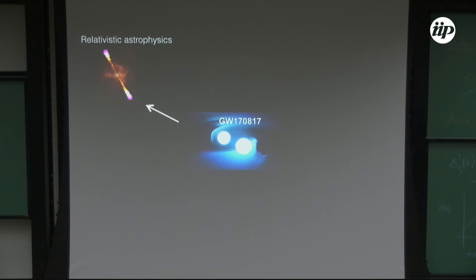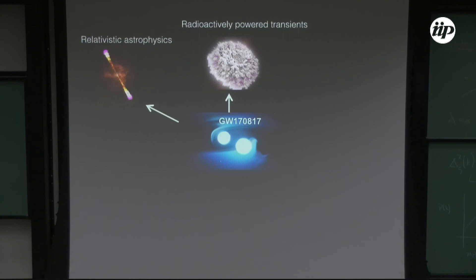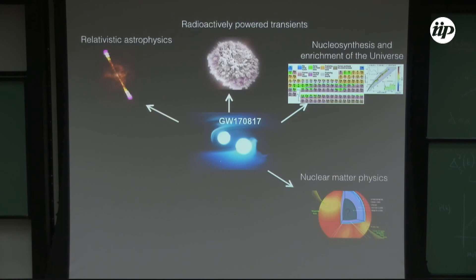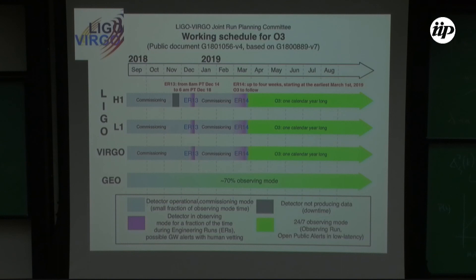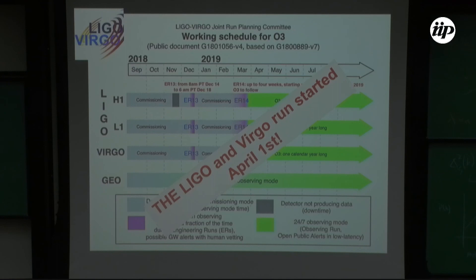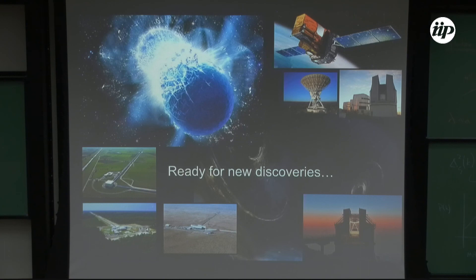In summary, with this type of event we can study relativistic astrophysics, radioactively powered transients and nucleosynthesis enrichment of the universe, nuclear matter physics at tremendous pressure, and cosmology and compact object formation and evolution. The third observational run O3 started in April and all three detectors are working. We are ready for new discoveries.